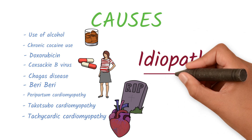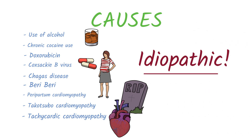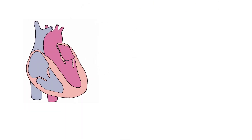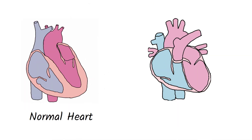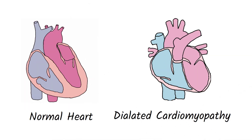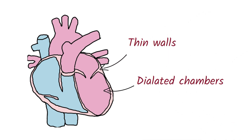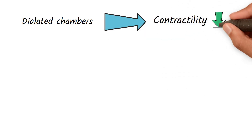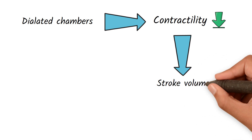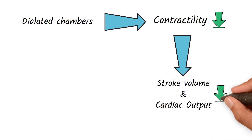Tachycardic cardiomyopathy is another cause, however the etiology of dilated cardiomyopathy is mostly idiopathic. In dilated cardiomyopathy there is eccentric hypertrophy, therefore the diameter of the heart chambers is increased. When the heart chambers are dilated, it reduces the contractility of the heart muscles, and then the stroke volume and cardiac output will also decrease.